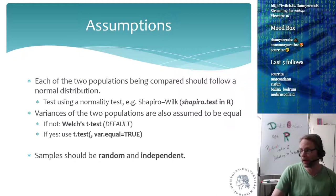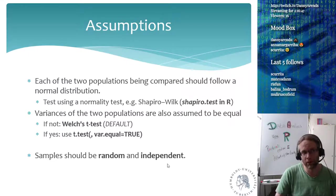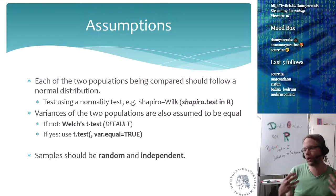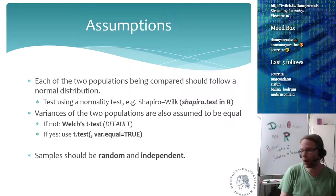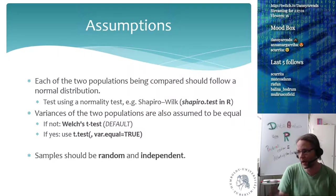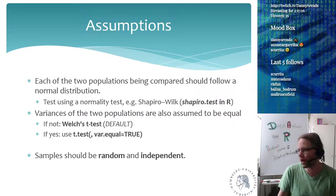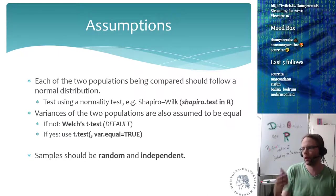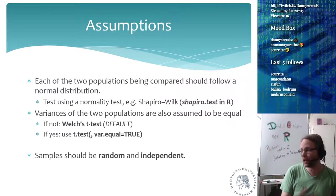The t-test also assumes that your samples are randomly drawn from the population and that they are independent. Independence is a difficult concept — generally you don't want people who are related to each other in the same group. The three assumptions are: normal distribution, samples are random, and they are independent of each other.